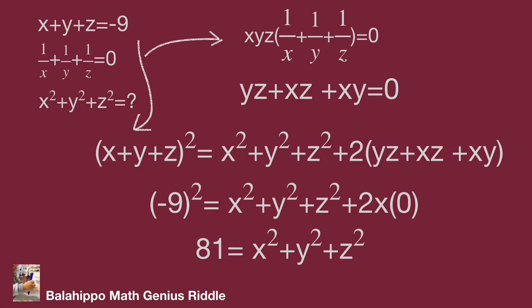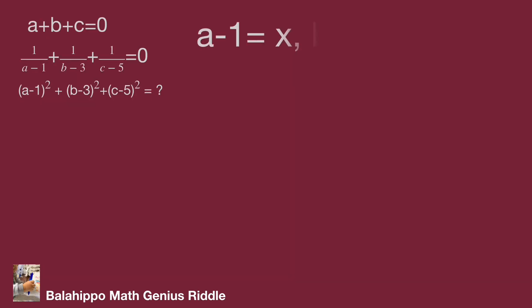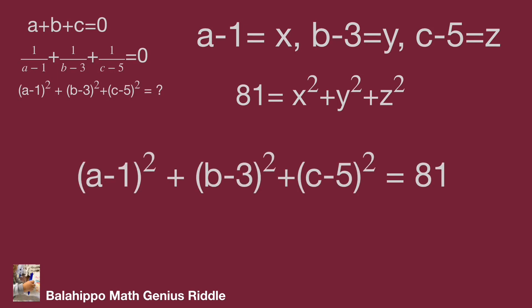So go back to the original problem. Now we have 81 equal to x squared plus y squared plus z squared. Substitute x by a minus one, y by b minus three, z by c minus five. The equation is quantity a minus one squared plus quantity b minus three squared plus quantity c minus five squared equal to 81.